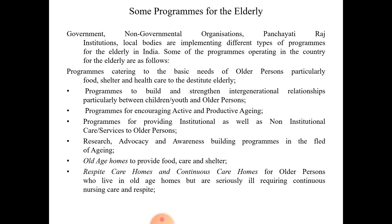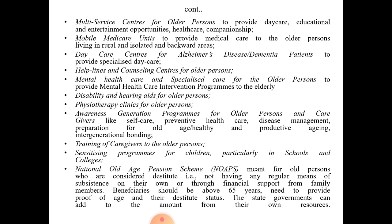Further programs include: research, advocacy, and awareness-building in the field of aging; old age homes to provide food, care, and shelter; respite care homes and continuous care homes for older persons who are seriously ill requiring continuous nursing care; and multi-service centers for older persons to provide daycare, educational and entertainment opportunities, healthcare, and companionship. Mobile Medicare units provide medical care to older persons living in rural, isolated, and backward areas.